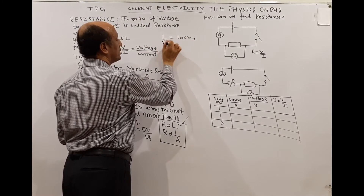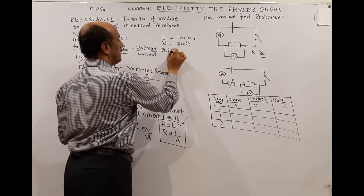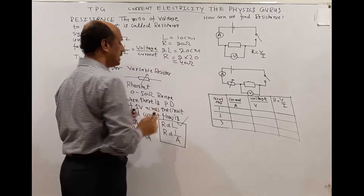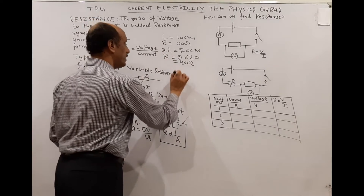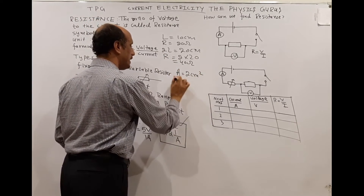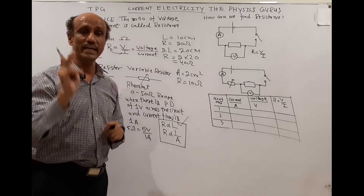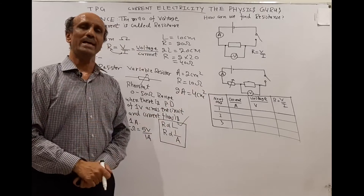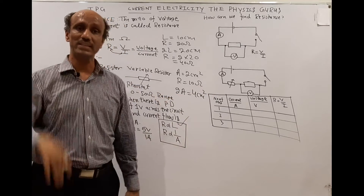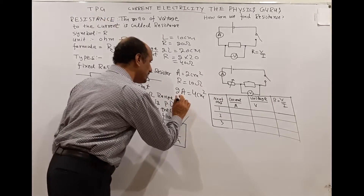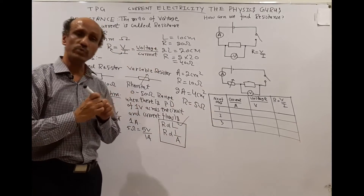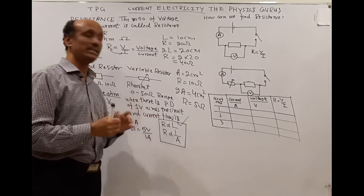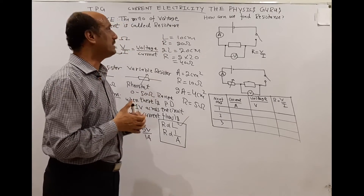For example, if the length is 10 cm and resistance is 20 ohms, doubling the length to 20 cm doubles the resistance to 40 ohms. For area of cross-section: if area is 2 cm² and resistance is 10 ohms, doubling the area to 4 cm² halves the resistance to 5 ohms. So length and resistance are directly proportional, while area and resistance are inversely proportional.